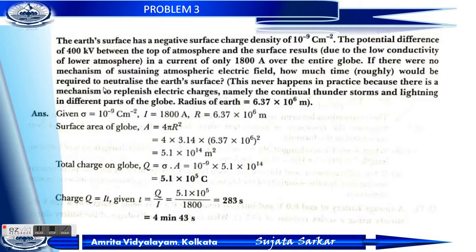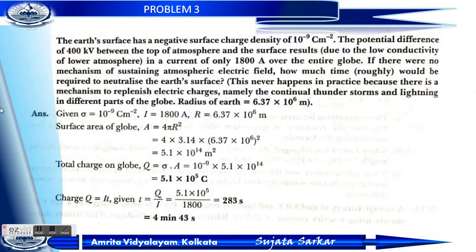If there were no mechanism of sustaining the atmospheric electric field, how much time roughly would be required to neutralize the earth's surface? In practice, this never happens because there is a mechanism to replenish electric charge — namely the continual thunderstorms and lightning in different parts of the globe.